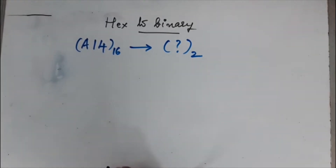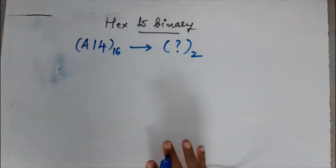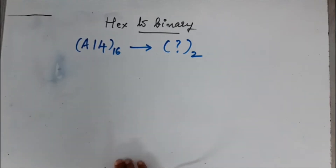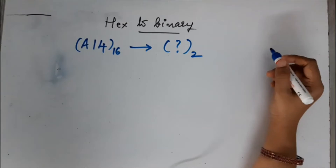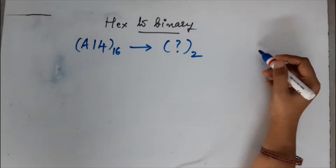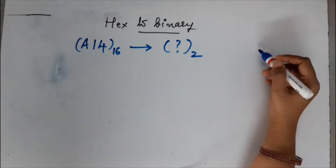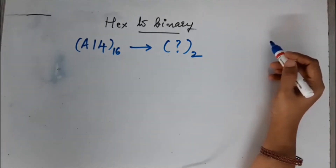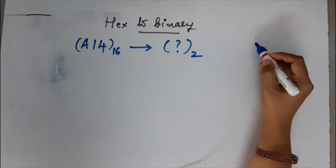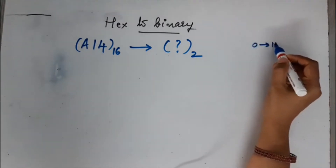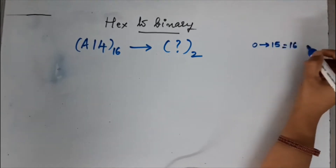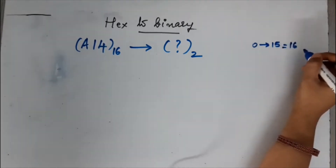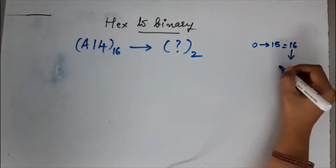We know that hex has 16 numbers from 0 to 15, and the largest number that can be represented using hex is 15. In the case of hex, 15 is represented as F. So 0 to 15 means 16 numbers — that is why the base of hex is 16, and 16 is 2 raised to 4.